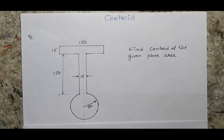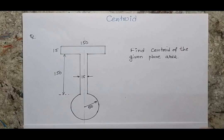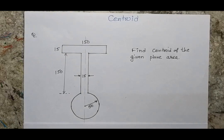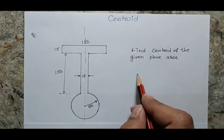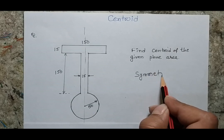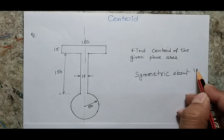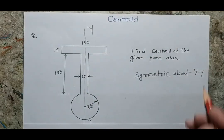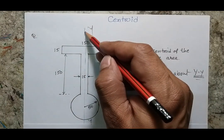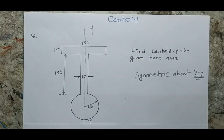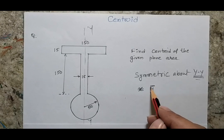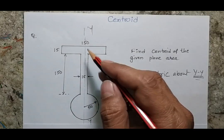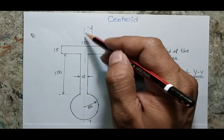I have to identify the position of the centroid of a given plane section. If I see this figure carefully, I can identify that the body is symmetric about the vertical axis. Whenever the body is symmetric about the YY axis, its centroid will lie on that line. So I only need to calculate the y-bar position — once I have that, the centroid is fully defined.